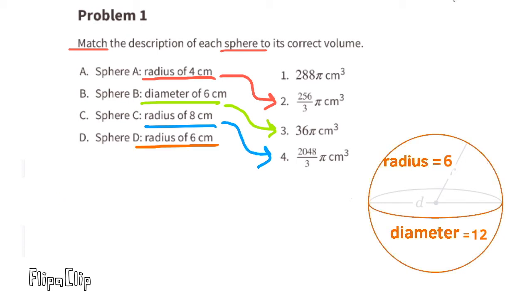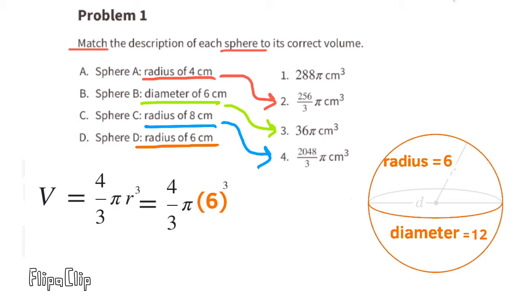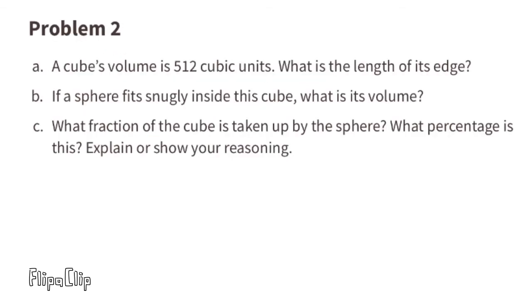Sphere D has a radius of 6 centimeters, so we substitute R with 6. 4 thirds times pi times 6 to the third power equals 288 pi. Sphere D matches volume 1.